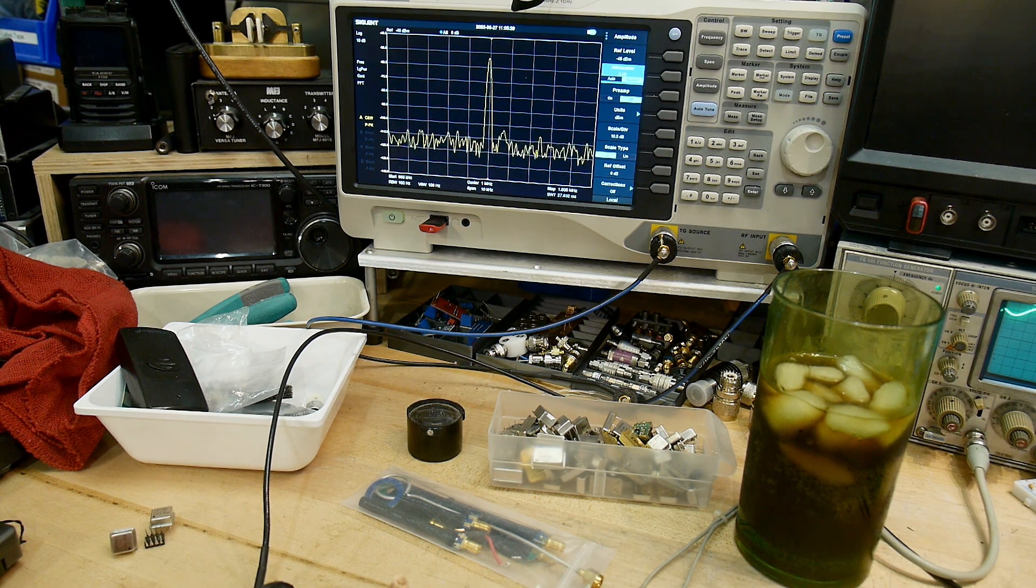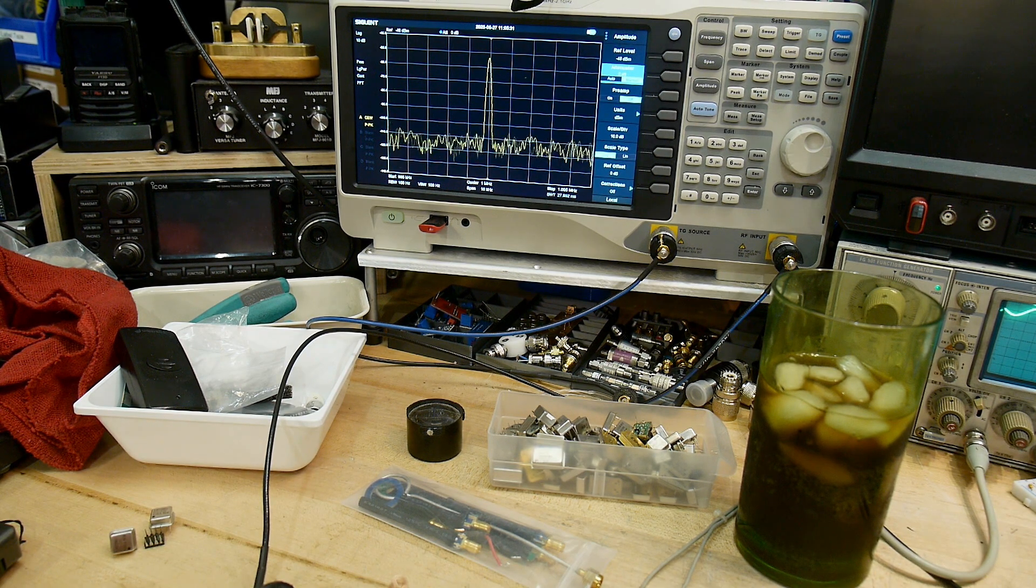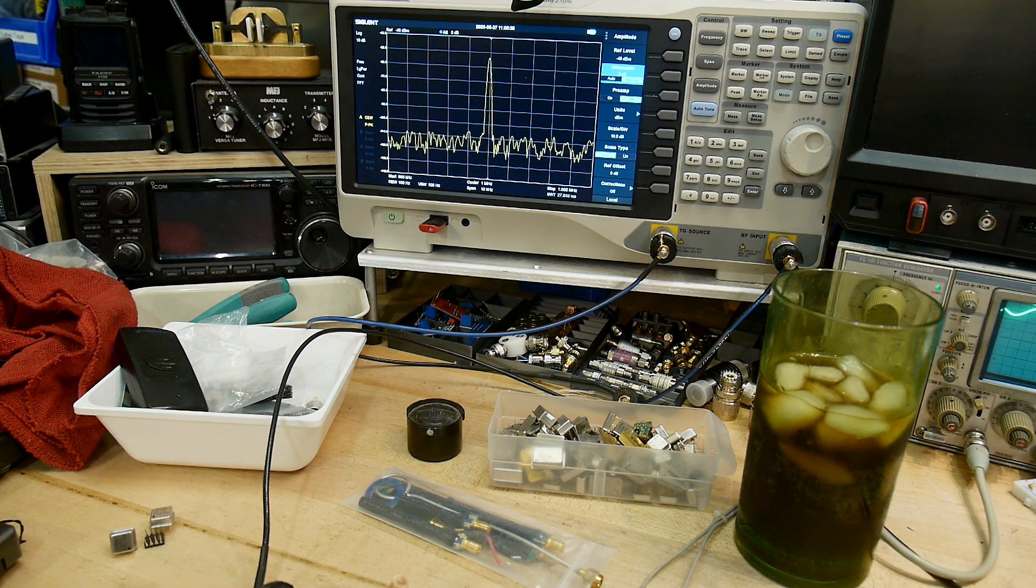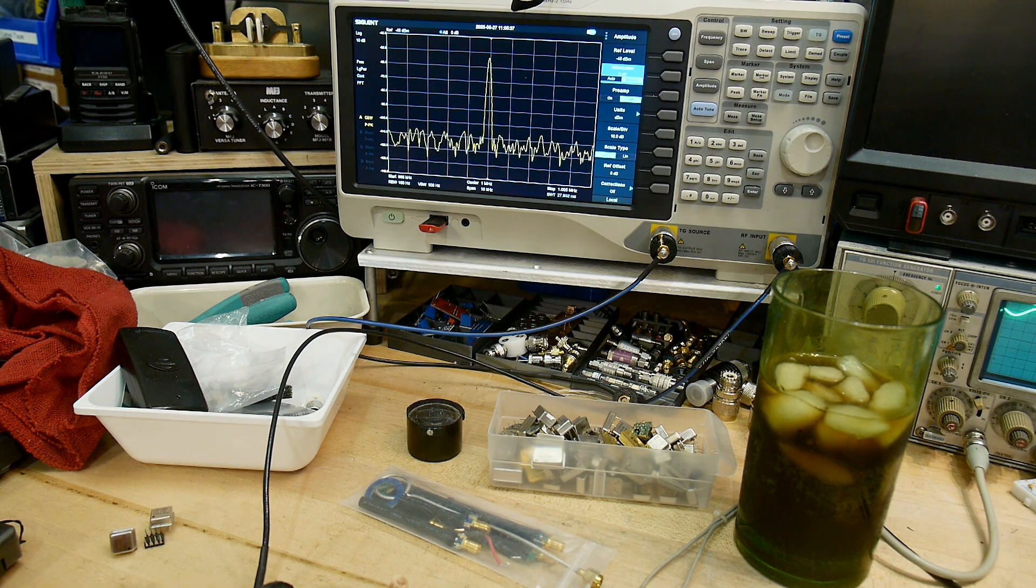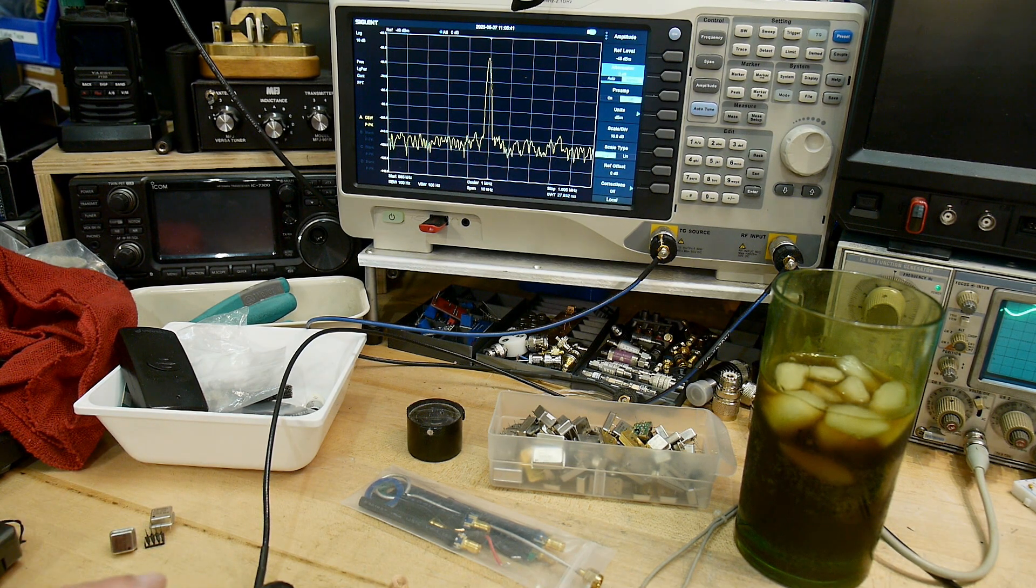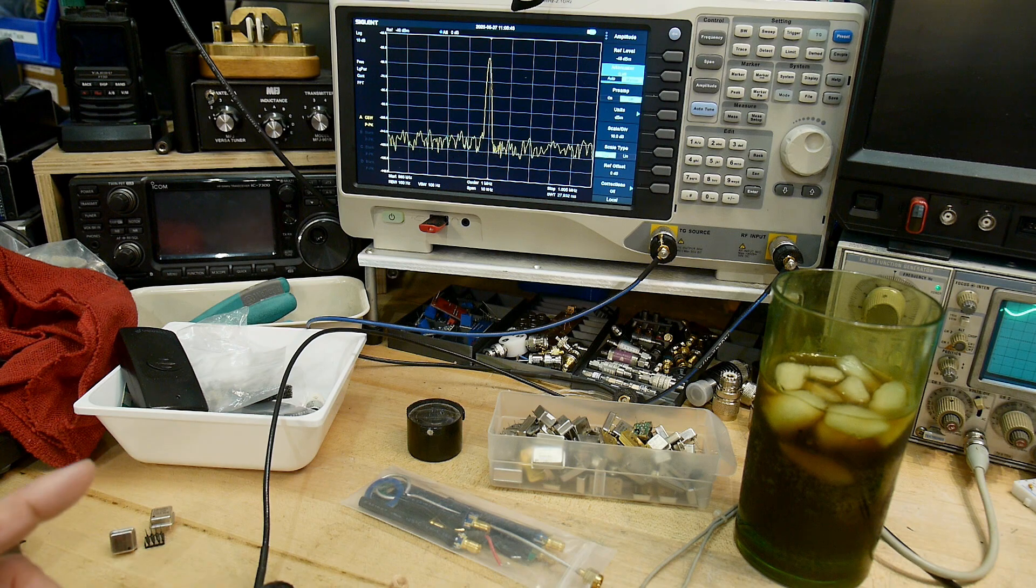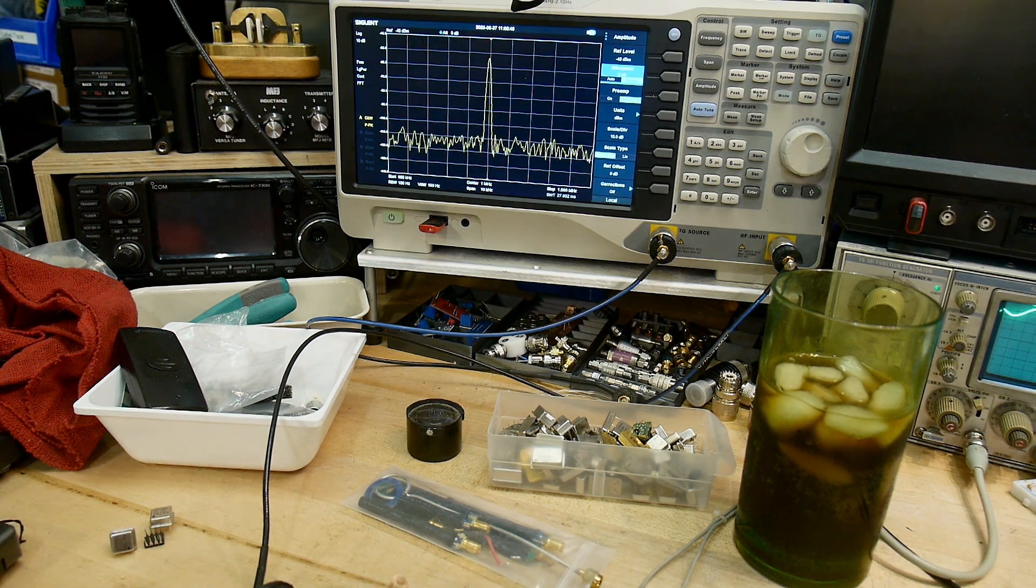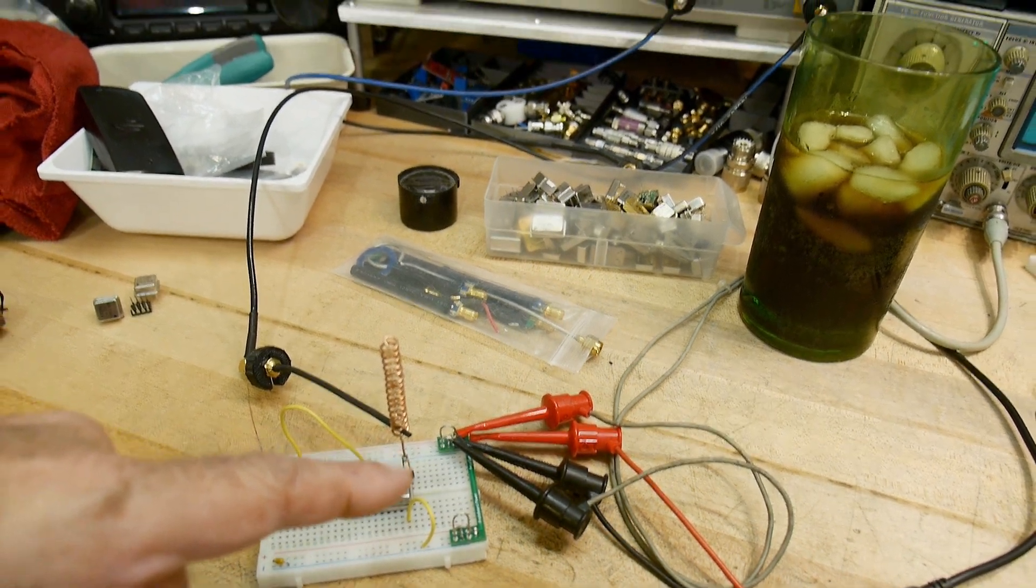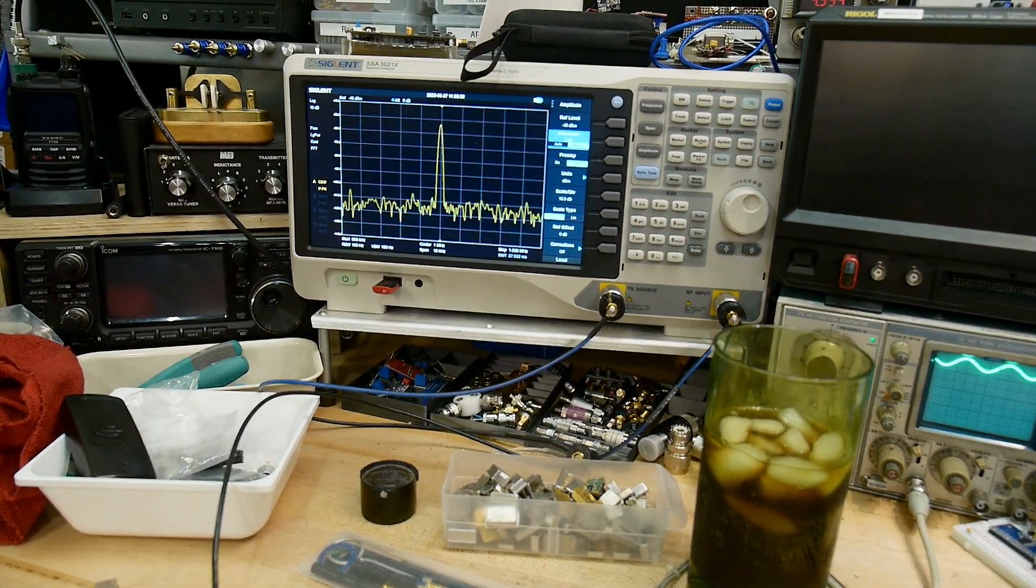So how do we amplitude modulate a signal? This is a signal. We want to amplitude modulate it. What does amplitude modulation mean? It means you're going to change, modulate, you're going to change the amplitude. How would you change the amplitude on such a thing? You could change the voltage that comes in.